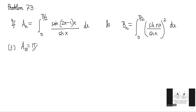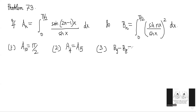The four options are: first, a₁₀ is equal to π/2; second, a₄ is equal to a₅; third, b₉ minus b₈ is equal to a₉; and fourth, b₉ minus a₉ is equal to a₈.